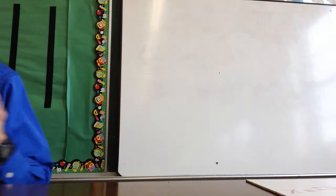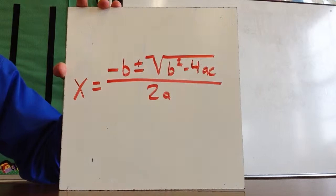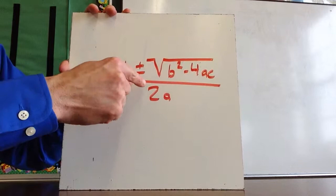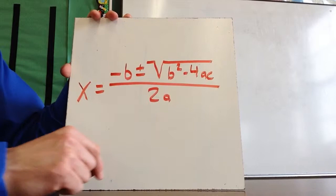This video will discuss chapter 9-5, the quadratic formula. You may want to take this formula and put it in your notes, because we're going to use this formula a lot today. The formula is: negative b plus or minus square root of b squared minus 4ac, all over 2a.